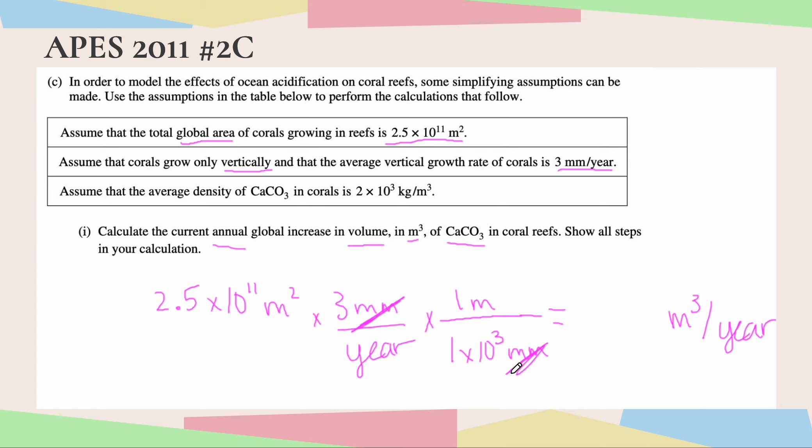So now let's go ahead and simply multiply. 2.5 times 10 to the 11th times 3 is just 7.5 times 10 to the 11th. But then since I'm dividing by this 10 to the 3rd down there, I'm going to go ahead and subtract my exponents. I'm kind of skipping steps here, so feel free to plug this into your calculator. So basically from here, after I had my 7.5 times 10 to the 11th, that divided by 10 to the 3rd would end up giving me 7.5 times 10 to the 8th meters cubed per year.